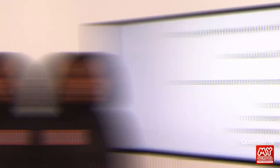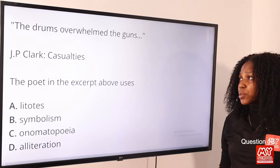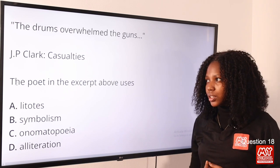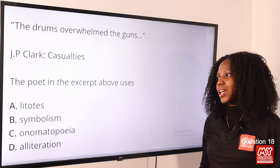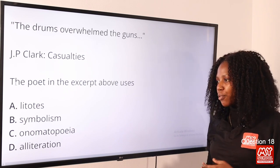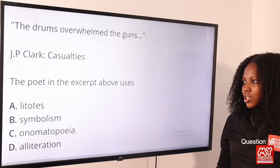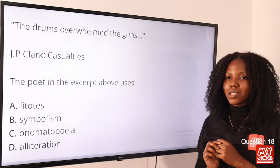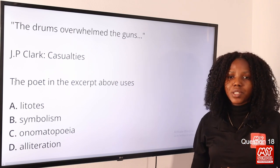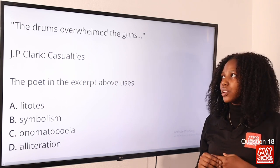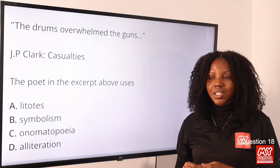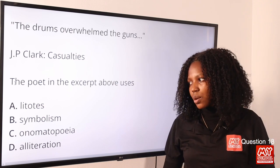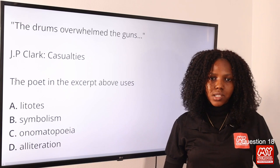Question 18: 'The drums overwhelm the guns' — J.P. Clark, Casualties. The poet uses symbolism: the drums represent the Africans while the guns represent the British. The answer is option B, symbolism.